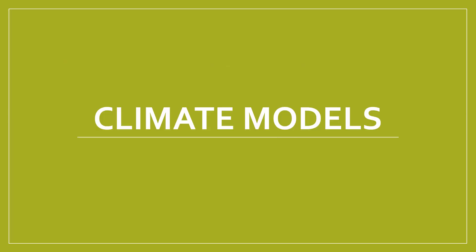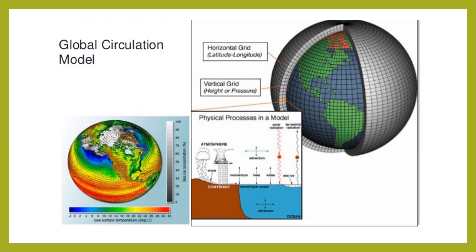Now that we know the causes and factors of climate change — what do we do? This is where science comes in: we can model our climate using climate models. Scientists and researchers use these climate models to predict our climate 100 years into the future. One example is a Global Circulation Model (GCM), which models the entire globe's climate using physics processes and theories, according to horizontal grids (latitude/longitude) and vertical grids (pressure levels).